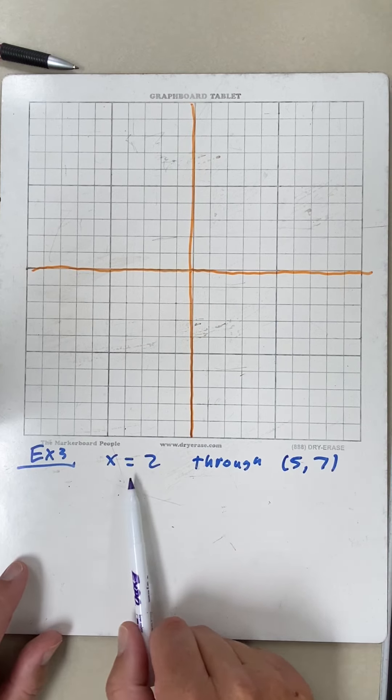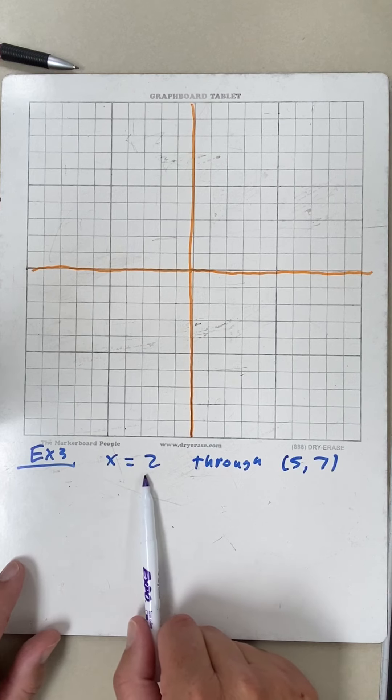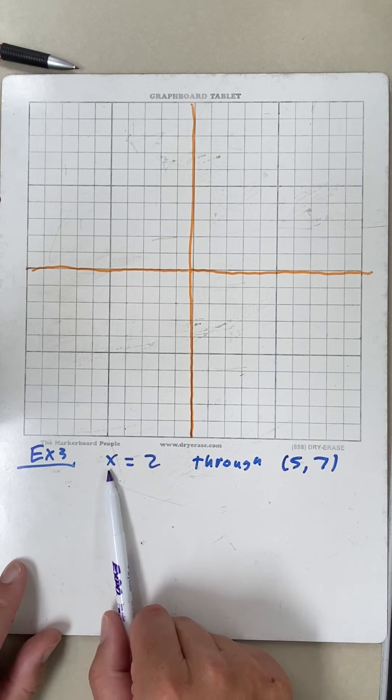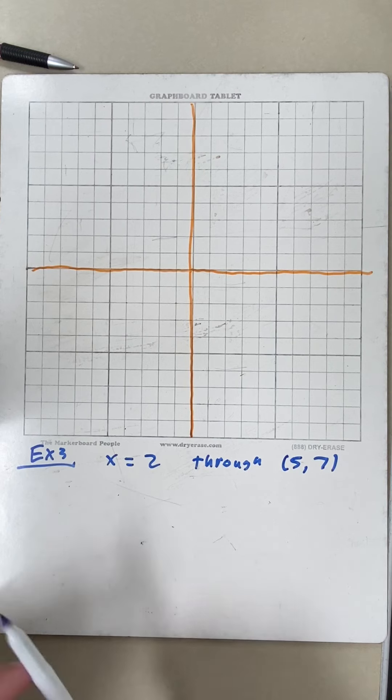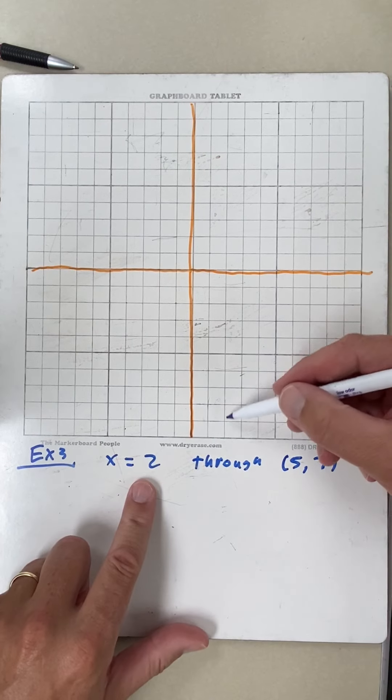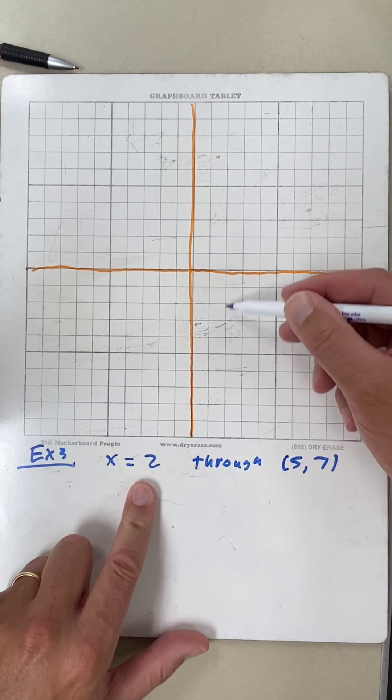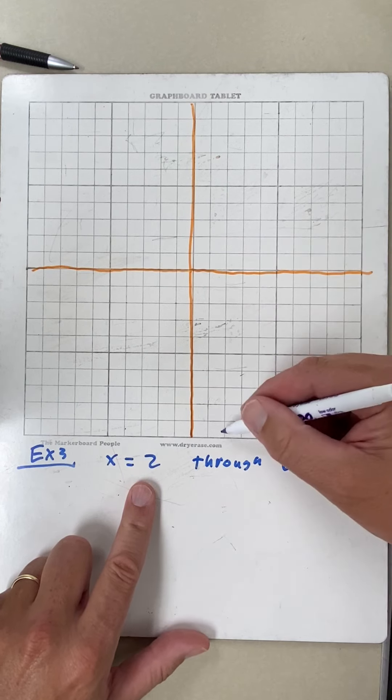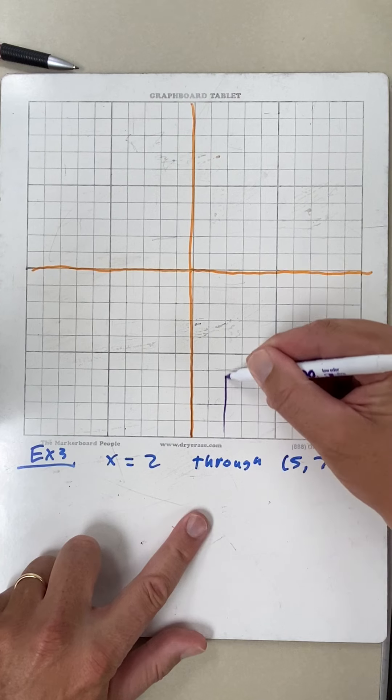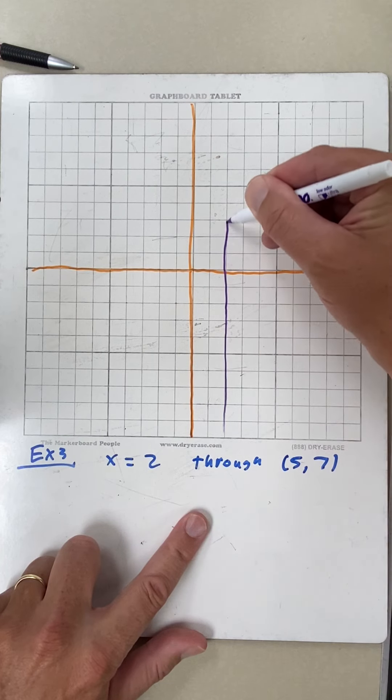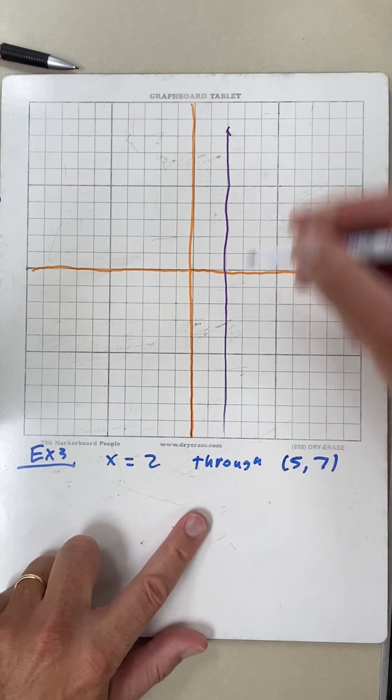If you remember back to 2.1, if there's only one letter, it's a vertical or horizontal line. And if you remember that the x ones are the vertical ones, because x is equal to 2 here: 2 negative 8, 2 negative 5, 2 negative 3, 2 0. So x is equal to 2 all the way along this line.